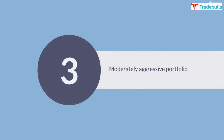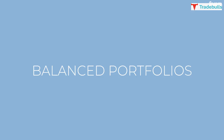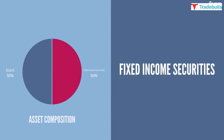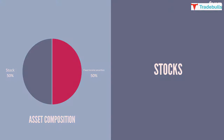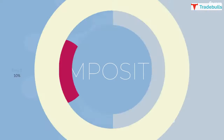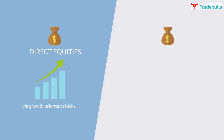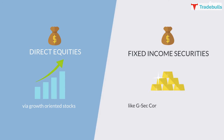3. Moderately Aggressive Portfolio. These are 55–65% equity and 35–45% other assets. These portfolios are sometimes referred to as balanced portfolios, because the asset composition is almost evenly split between fixed income securities and stocks. Here, growth and income are well-balanced. Composition: It is mostly a 50/50 to 60/40 mix of allocation in equities via growth-oriented stocks and fixed income securities like GSECs, corporate bonds, gold, etc.